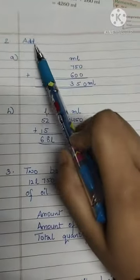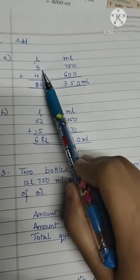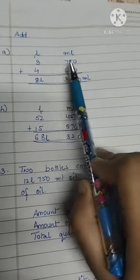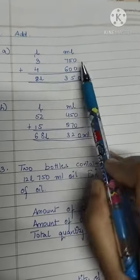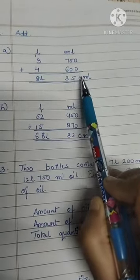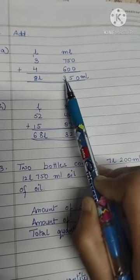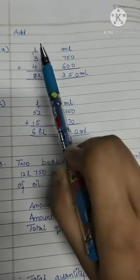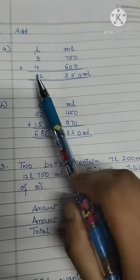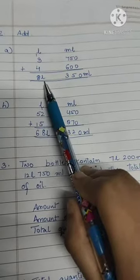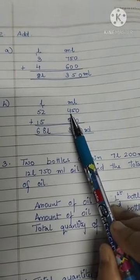Coming to question number two, that is add. Simply you have to add the liters and milliliters together. Part a: 3 liters 750 ml plus 4 liters 600 ml. So you have to add it. You will get 0 plus 0 is 0, 5 plus 0 is 5, 7 plus 6 is 13, so 3 here and 1 carry. 3 plus 1 is 4, 4 plus 4 is 8. So the sum you will get is 8 liters 350 ml.